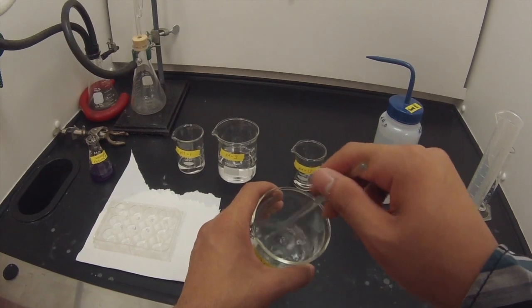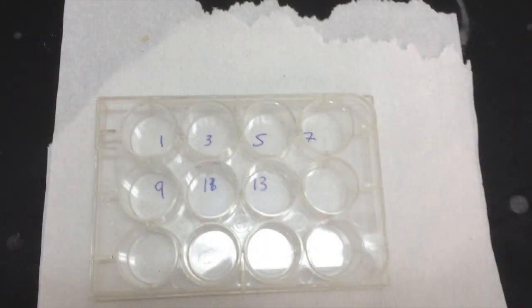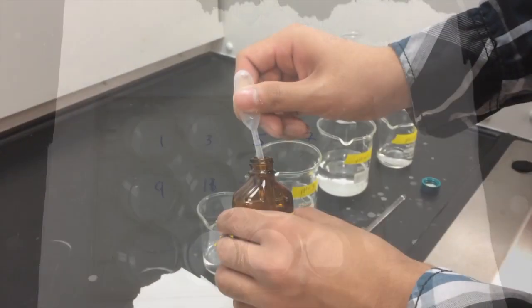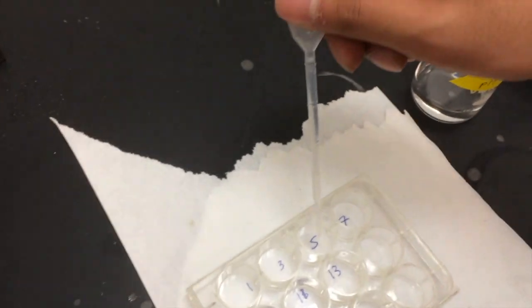On a sheet of paper, label seven wells with the appropriate pHs so that they sit over the corresponding wells. Add 2 milliliters of each solution into the corresponding well and use the stock solutions for pHs 5, 7, and 9.